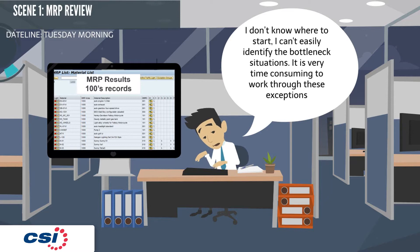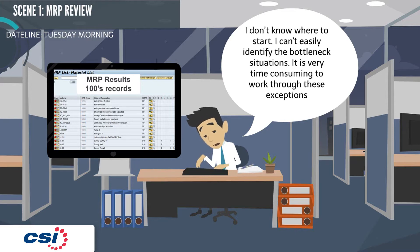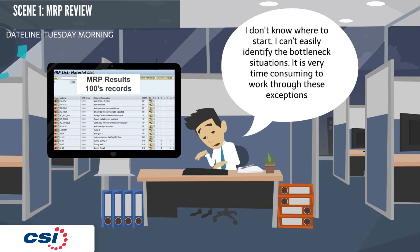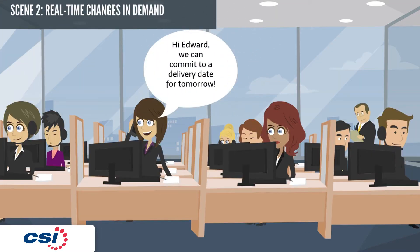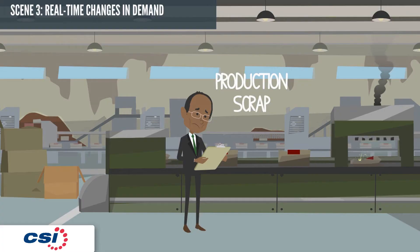It's Tuesday morning and Max is reviewing all the results from the traditional MRP run the night before. He is presented with an enormous list of exceptions in no particular order, which he has to walk through to solve bottleneck situations. Often it takes him most of his morning to work through the list and determine the best possible solutions without a holistic view of the supply and demand situation. In the meantime, Amanda is firming up sales orders with her customers and confirming dates.